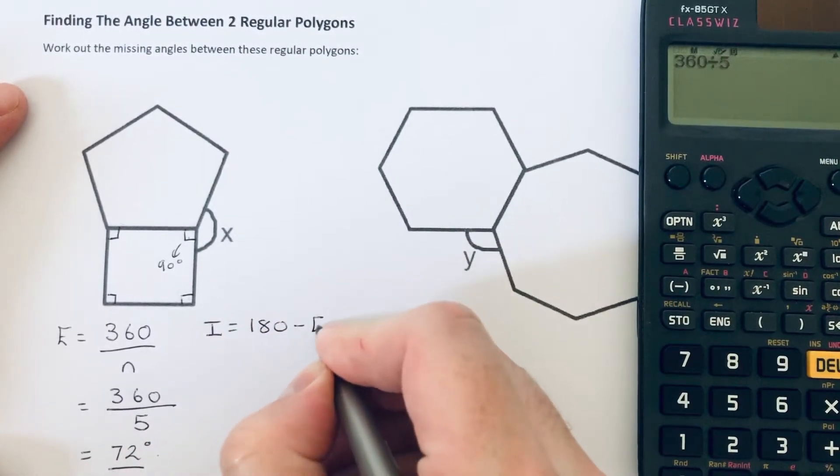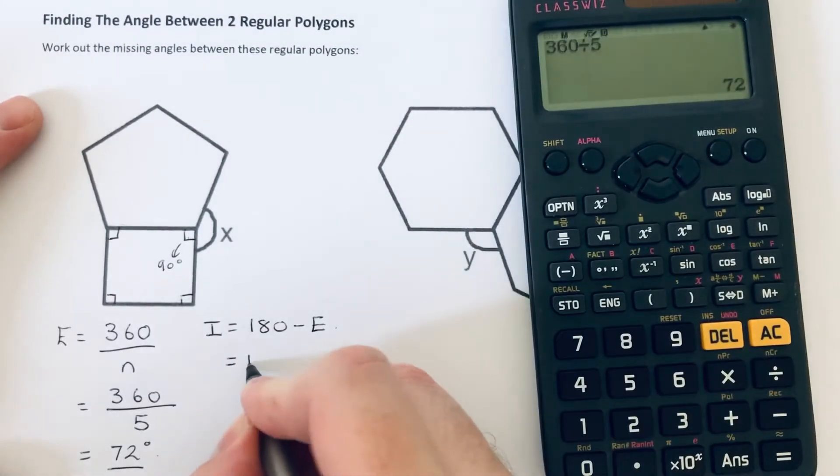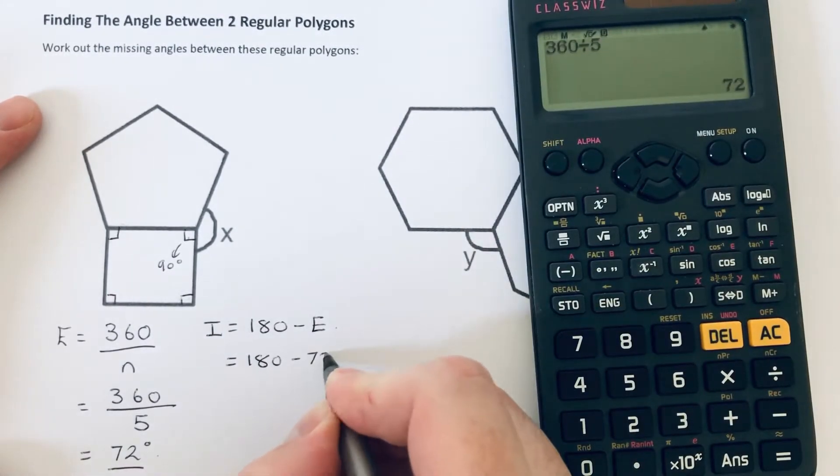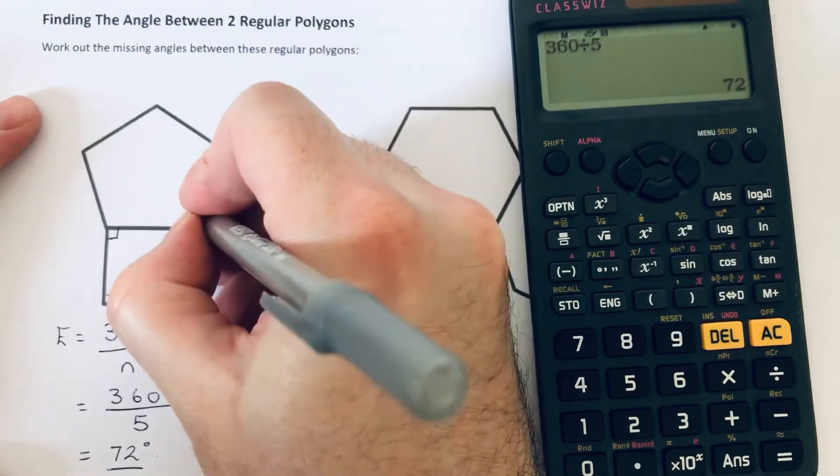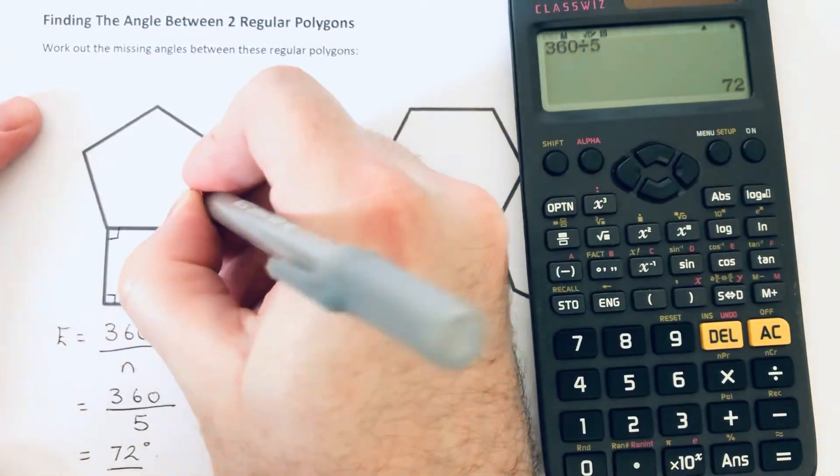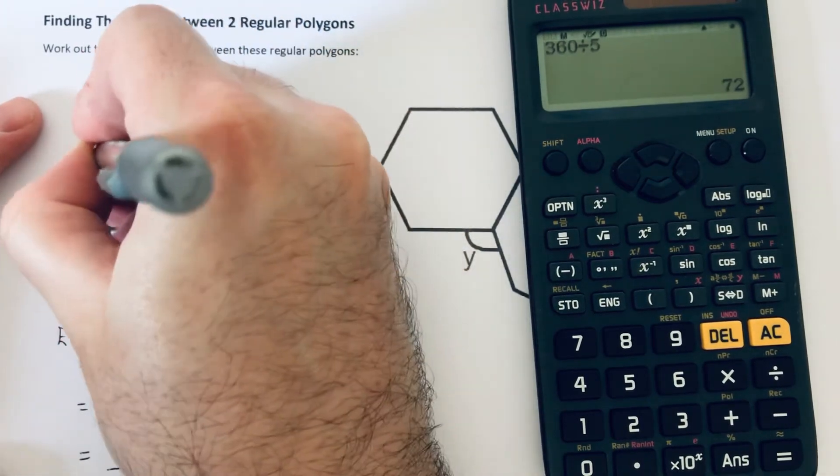So there we go. 180 take away 72, which is 108 degrees. So our interior angles of our regular pentagon are 108 degrees.